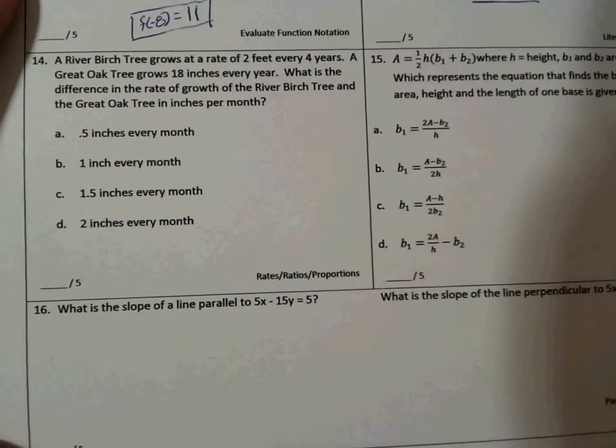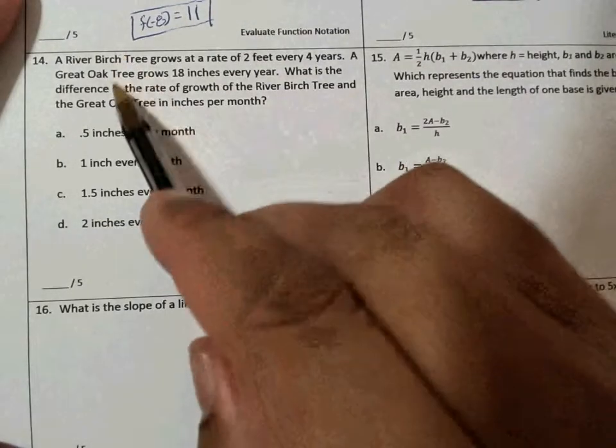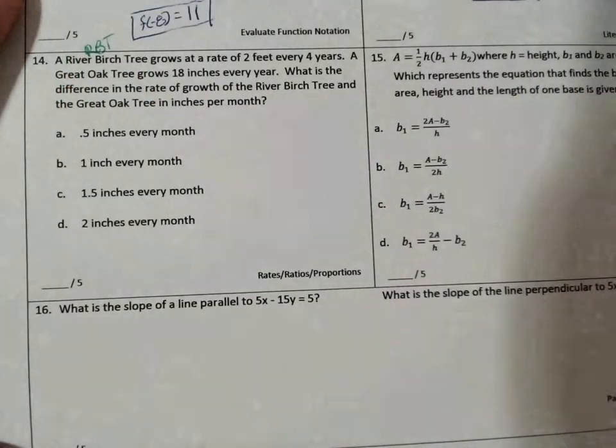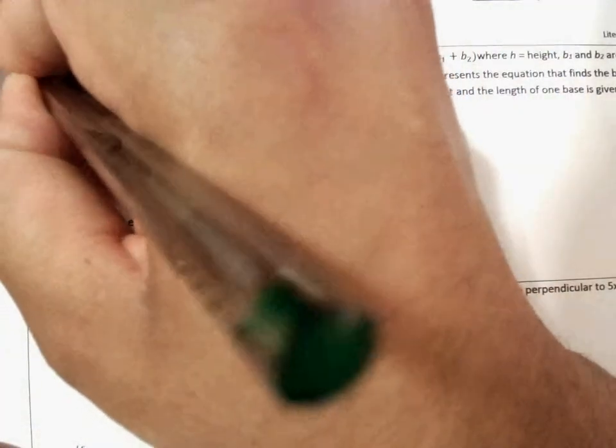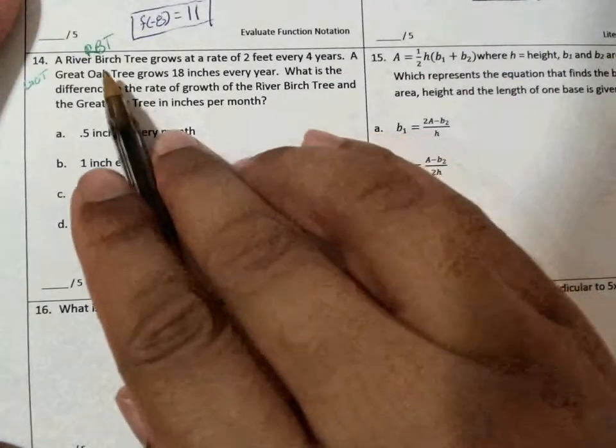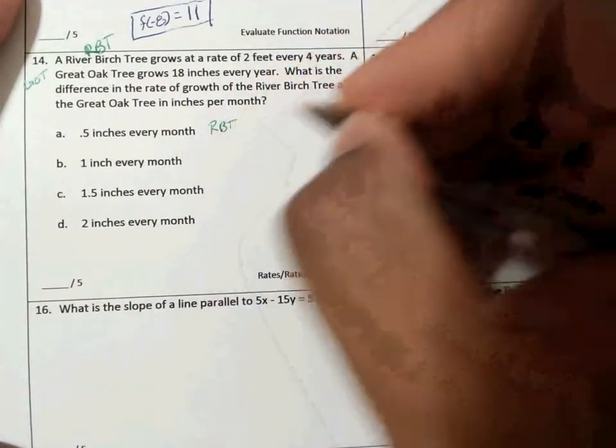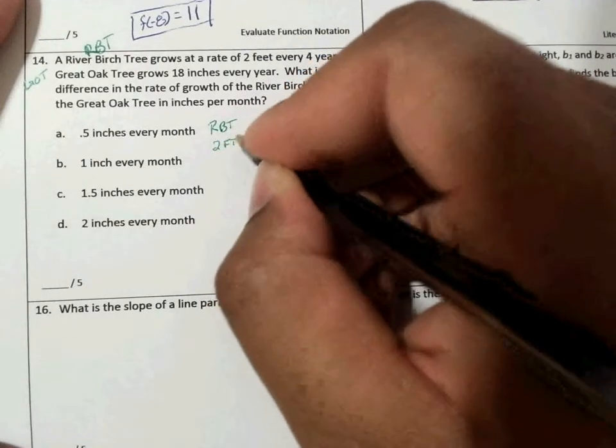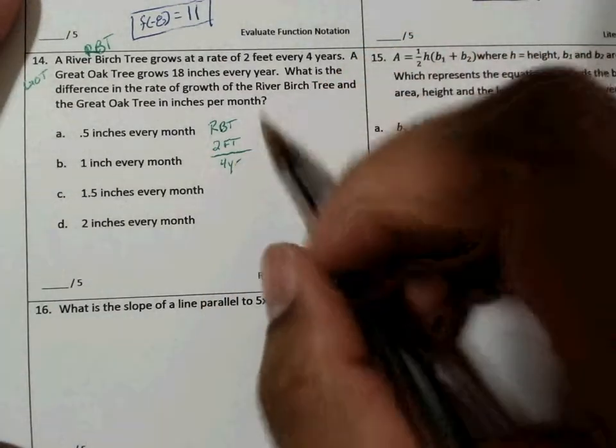Hey y'all, we're on problem number 14. It is a conversion problem. We have two things going on: the river birch tree, so I'm going to call that RBT, and then we have the great oak tree, GOT. We can see that the river birch tree is 2 feet every 4 years and we're trying to get both trees in inches per month.